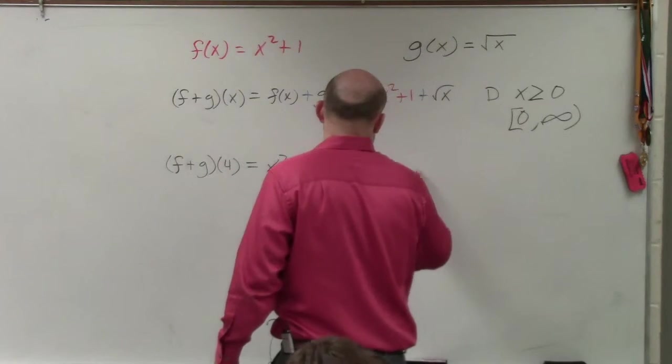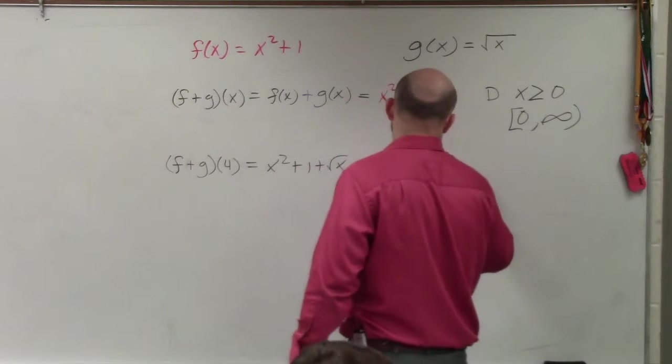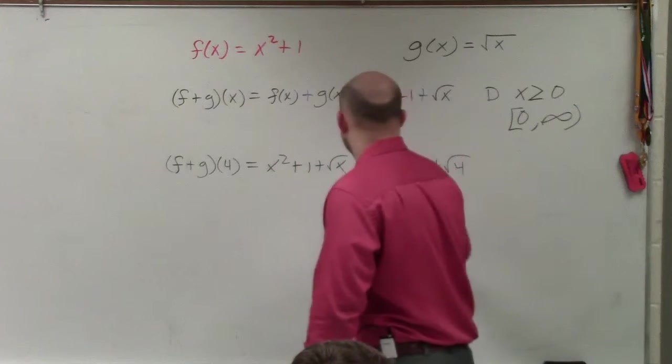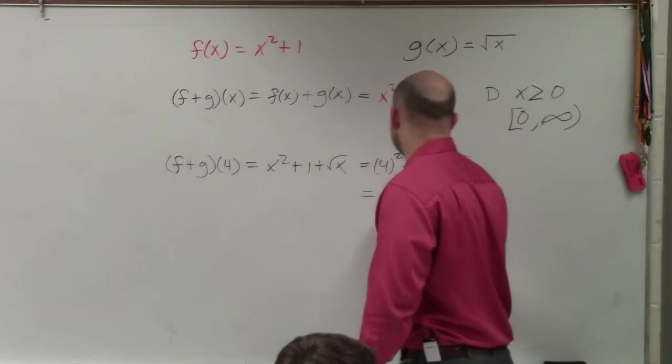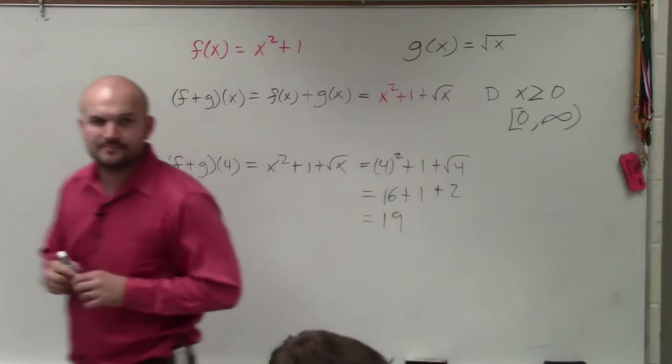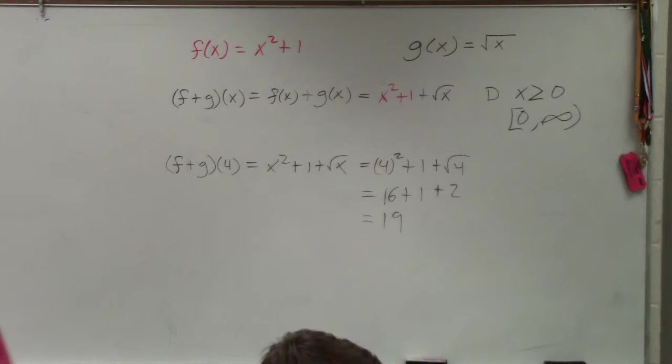So I do 4 squared plus 1 plus the square root of 4, which is 16 plus 1 plus 2, which is 19. Does that make sense? Yes? OK.